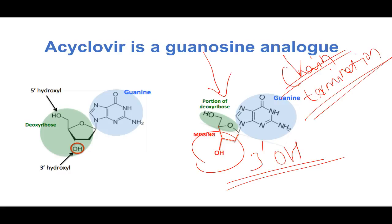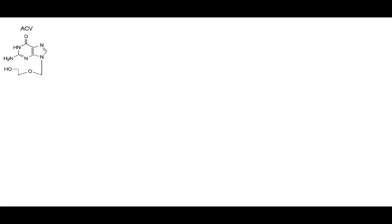So how is acyclovir causing chain termination? Let us see. Acyclovir, once it enters the viral infected cells, there is a viral thymidine kinase. This viral thymidine kinase will phosphorylate acyclovir to acyclovir monophosphate.